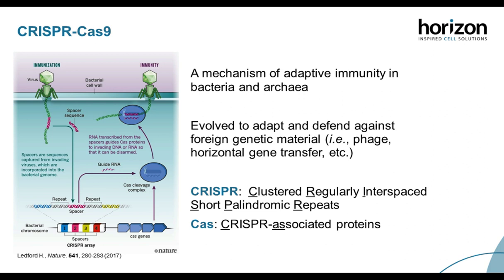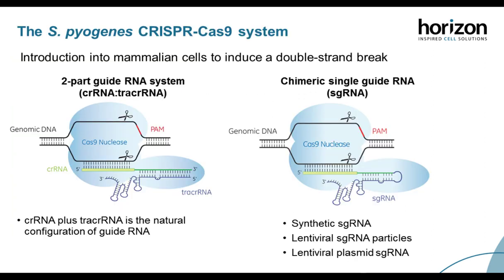Bacteria need an adaptable immune system to generate resistant mutants because phages outnumber and evolve much faster than bacteria. Bacteria acquire foreign DNA from any invading substance and integrate this into their own genome at a specific CRISPR locus. The bacteria express the integrated foreign DNA sequences as guide CRISPR-RNAs that interact with CAS proteins to cause interference of incoming viral or plasmid activity by cleaving complementary sequences, allowing bacteria to eliminate foreign invaders they have encountered in the past.